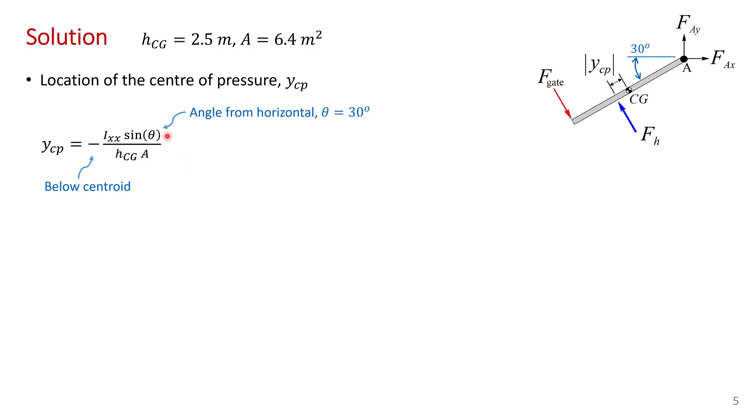Now be careful when you're doing these problems that the angle theta here is the angle of the gate from the horizontal. So it's measured relative to the free surface. And the minus sign here indicates that the center of pressure is below the center of gravity of the gate. That's why I have the absolute signs here.